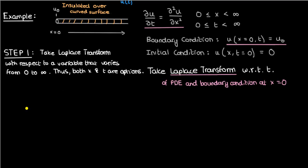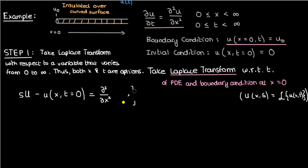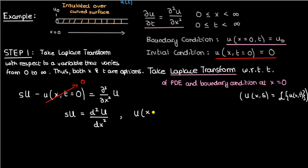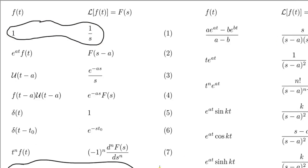Taking the Laplace transform of the PDE: the Laplace transform of the first time derivative is s times capital U minus u evaluated at t equals 0, where capital U is the Laplace transform of u with respect to t. This equals the Laplace transform of the second partial of u with respect to x. Since we're transforming with respect to t, we can pull the x derivative outside the transform, leaving the second derivative of capital U with respect to x. Since the initial condition is 0, the ODE for capital U becomes d²U/dx² equals s times U. The Laplace transform of the boundary condition gives capital U at x equals 0 equals U₀ over s, since the Laplace transform of a constant is that constant divided by s.